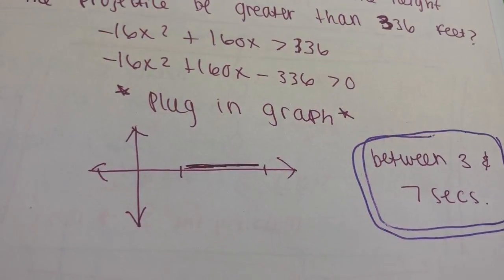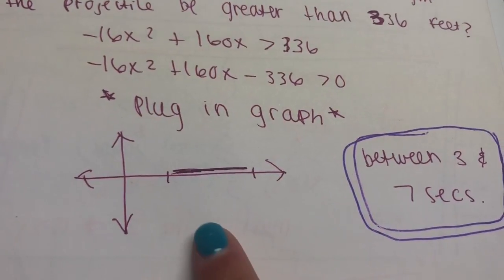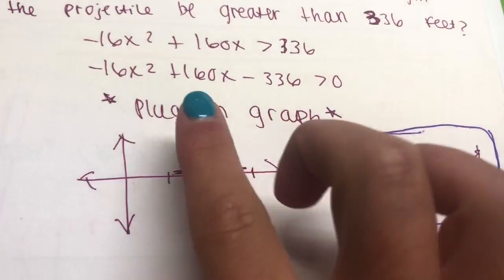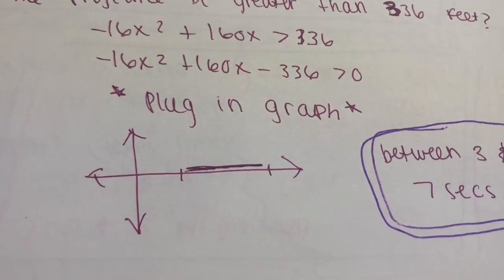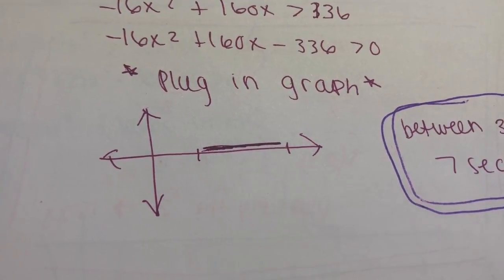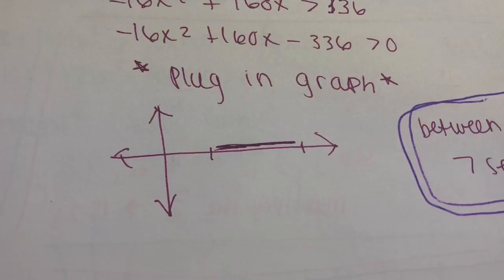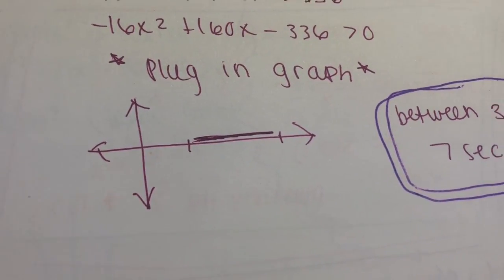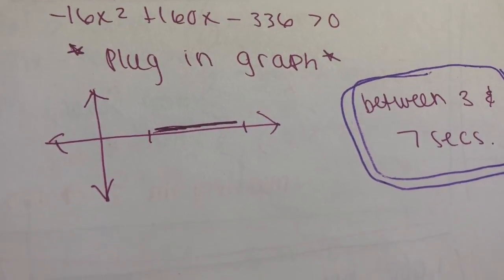After looking at the graph from Desmos, you can see that at x = 3 and x = 7 there is a shaded region. That means during the 3 to 7 second interval, the height of the projectile will be greater than 336 feet.